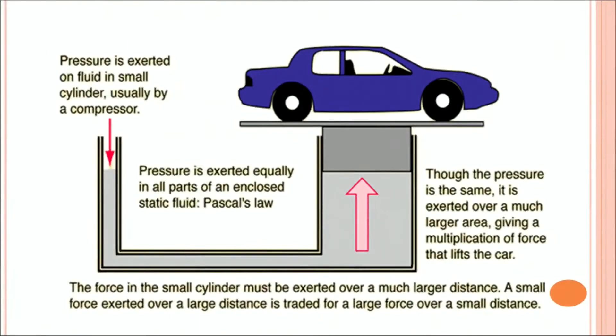Here, we again give the demonstration in detail of how we get a small force on one side and a larger force on the other side of the platform which is connected to the liquid. The force in the small cylinder must be exerted over a much larger distance. A small force exerted over a large distance is traded for a large force over a small distance. This is somewhat an inverse case.